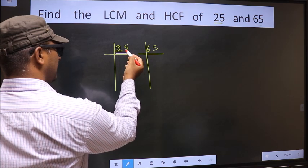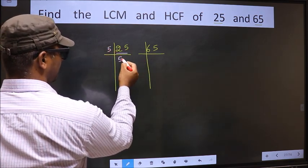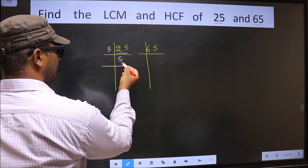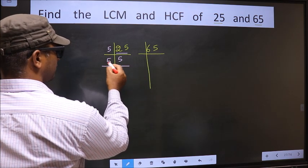Here we have 25. 25 is 5, 5 is 25. Now we have 5. 5 is the prime number. So 5 once 5.